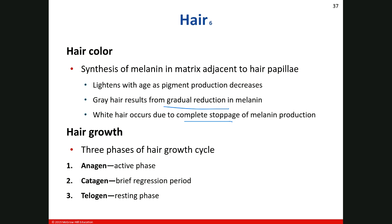The three phases of hair growth — you want to know all three because there's probably going to be a test question on it. The first is the anagen phase, the actual active growth phase. Then hair growth slows down a little bit — we call that the catagen phase. And then there's a short period of time where it doesn't grow at all — that's the telogen phase.